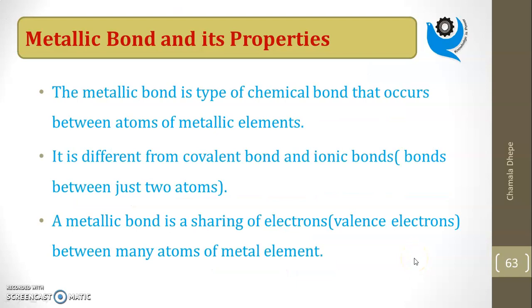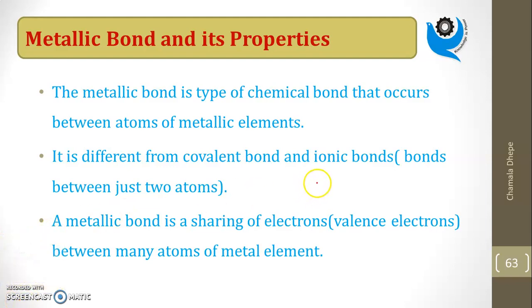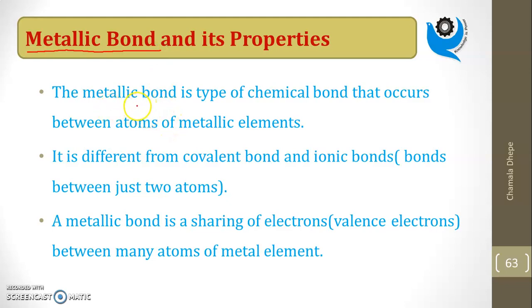First we will see what is the metallic bond. Before this, we have covered the ionic bond, also called the electrovalent bond. Another bond is the covalent bond and the coordinate bond, that we have covered in the previous videos. In this video we are going to cover the metallic bond.